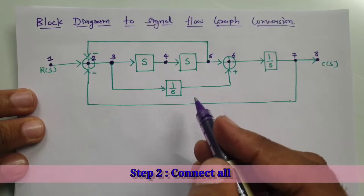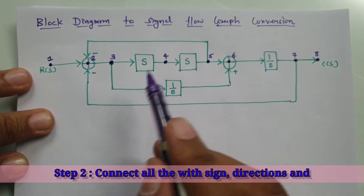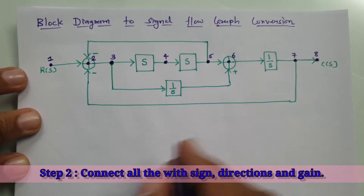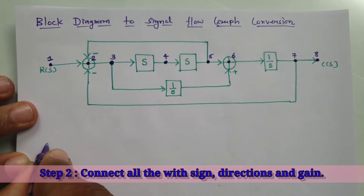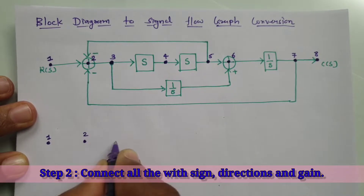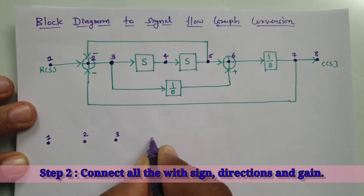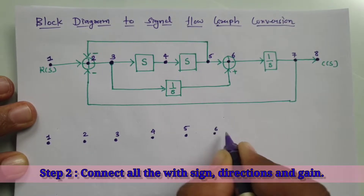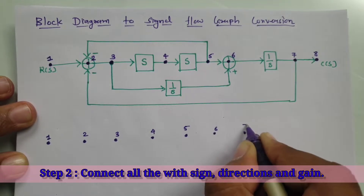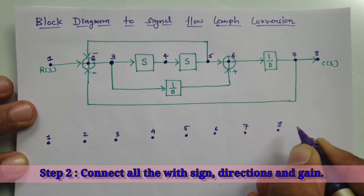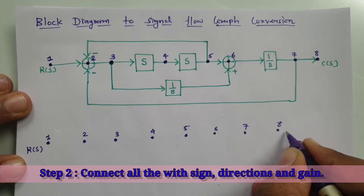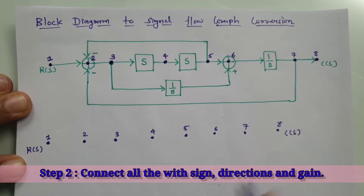Now we need to connect all the elements by direction and gain in the signal flow graph. So here we have: first node, second node, third node, fourth node, fifth node, sixth node, seventh node, and eighth node. At the first node we have input R(S), and at the eighth node we have output C(S).